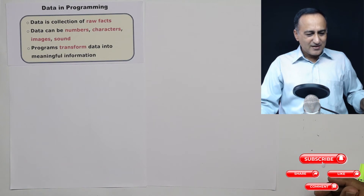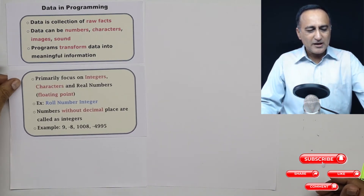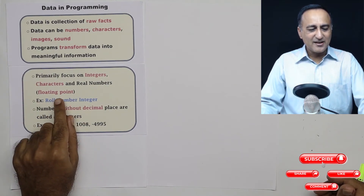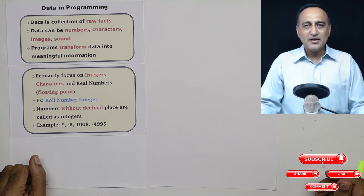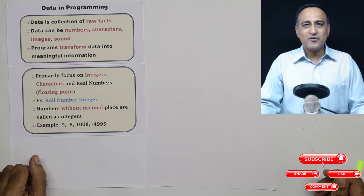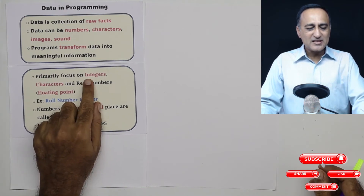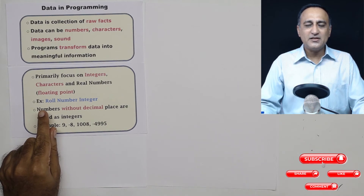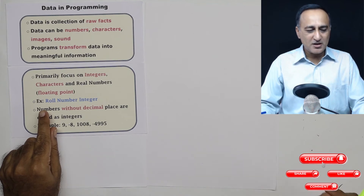In our discussion here we are going to be primarily focused on integers, characters, and real numbers — also called floating point numbers. An integer is a number which doesn't have any fractional or decimal parts. If I ask your roll number, you'd say 10, 15, or 515 — you'd never say 515.26. So an integer can be positive, negative, or zero, but not something like 2.2 or 2.3.